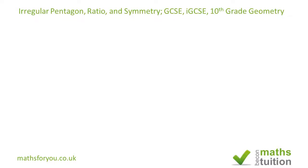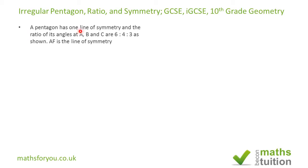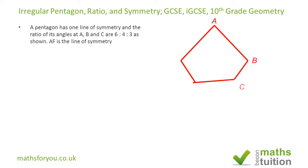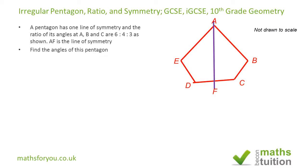Welcome to this exercise on an irregular pentagon involving ratio and line of symmetry. The pentagon has one line of symmetry, and the ratio of its angles at A, B, and C are 6 to 4 to 3 as shown. AF is the line of symmetry. The vertices are A, B, C, D, E, and F, and we are told this is not drawn to scale.